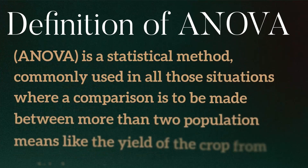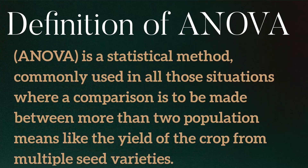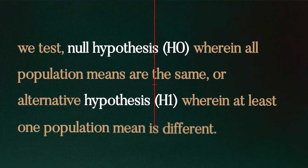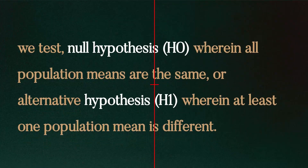What is ANOVA? Analysis of variance, ANOVA, is a statistical method commonly used in all those situations where a comparison is to be made between more than two population means, like the yield of the crop from multiple seed varieties. With the use of this technique, we test null hypothesis H0 wherein all population means are the same, or alternative hypothesis H1 wherein at least one population mean is different.